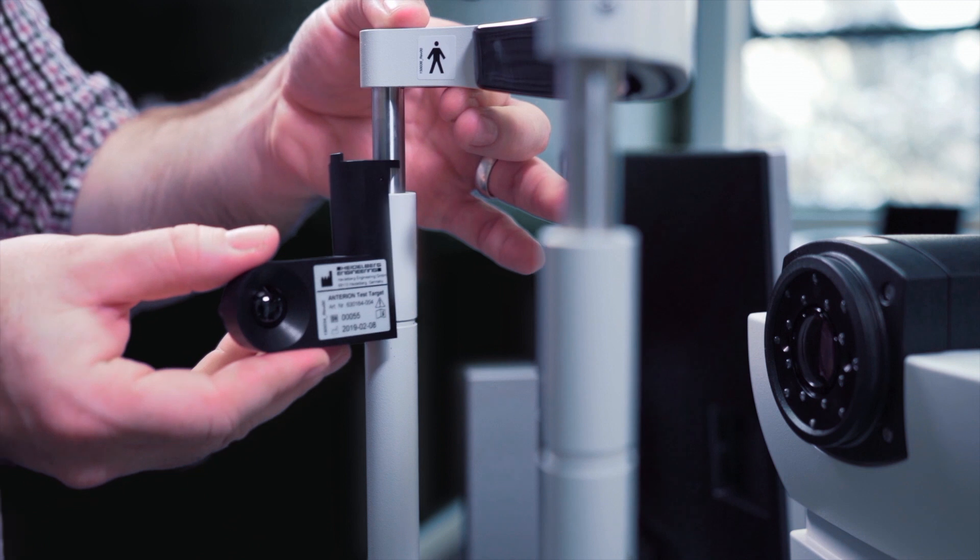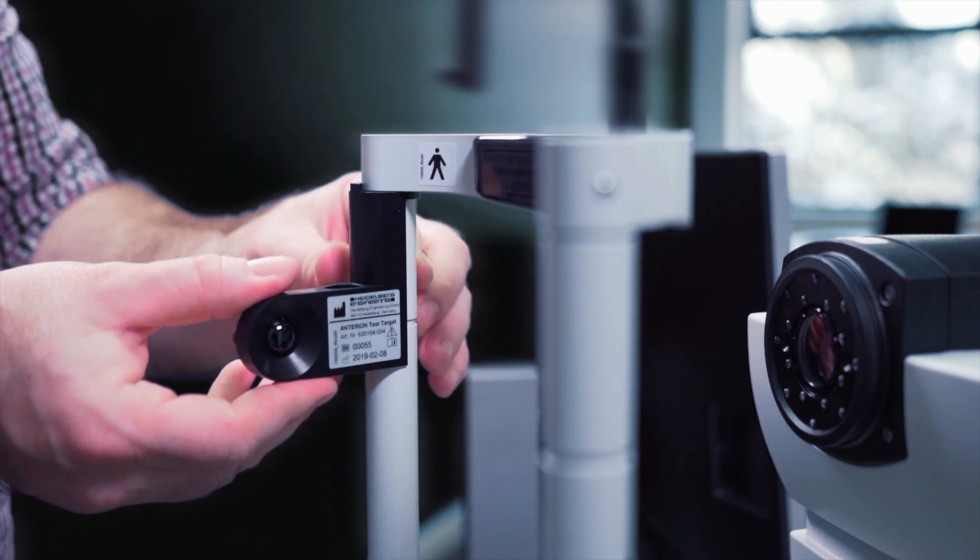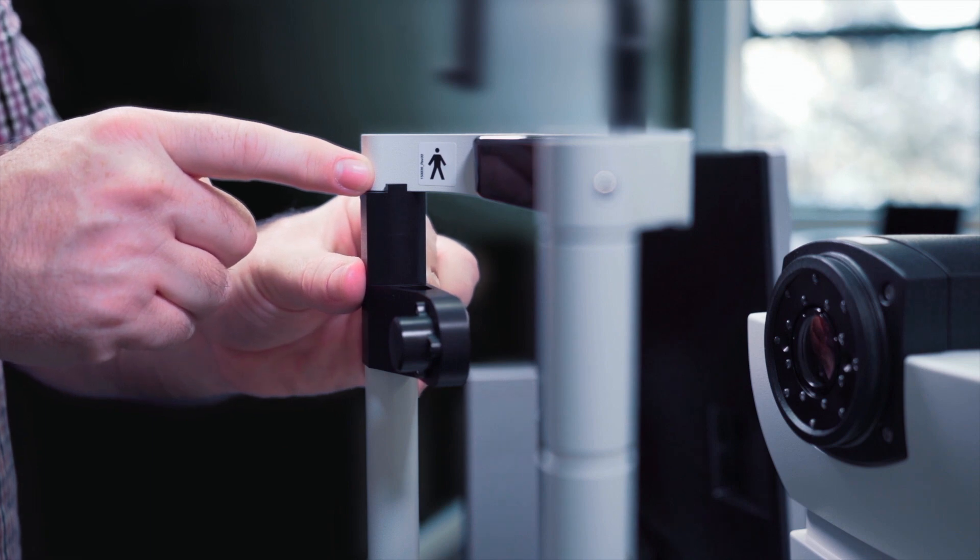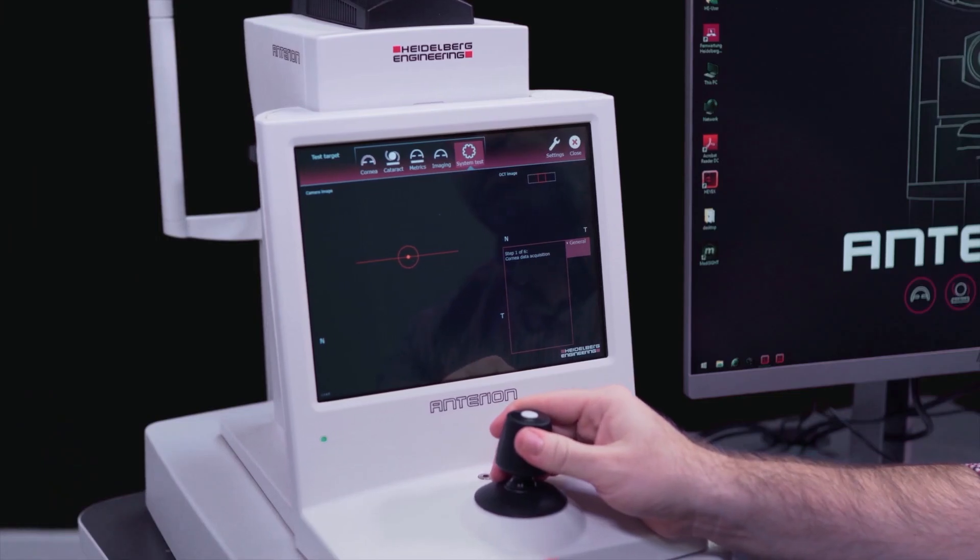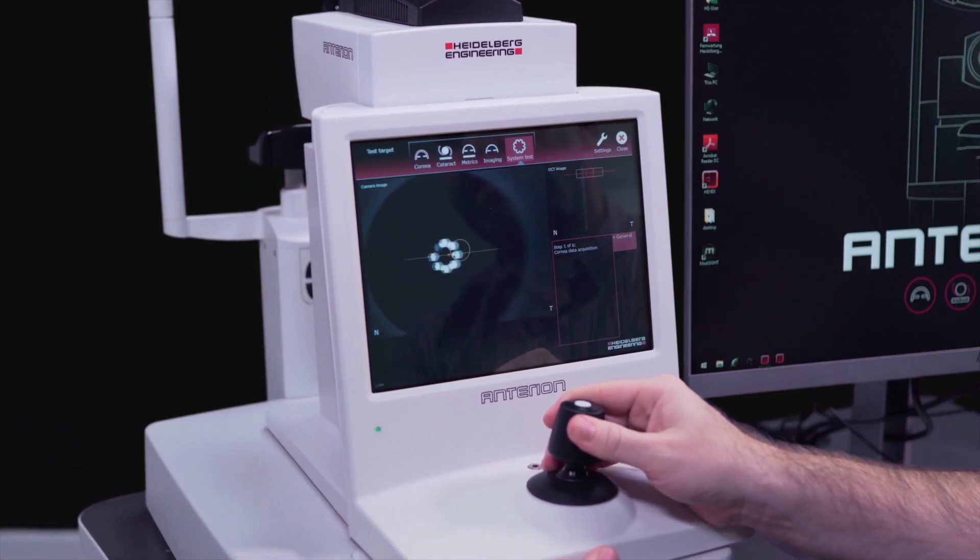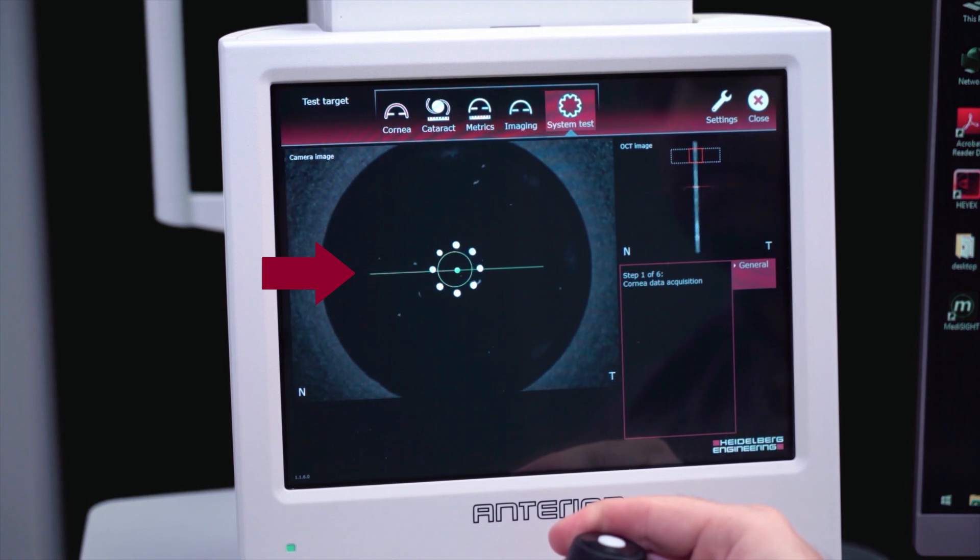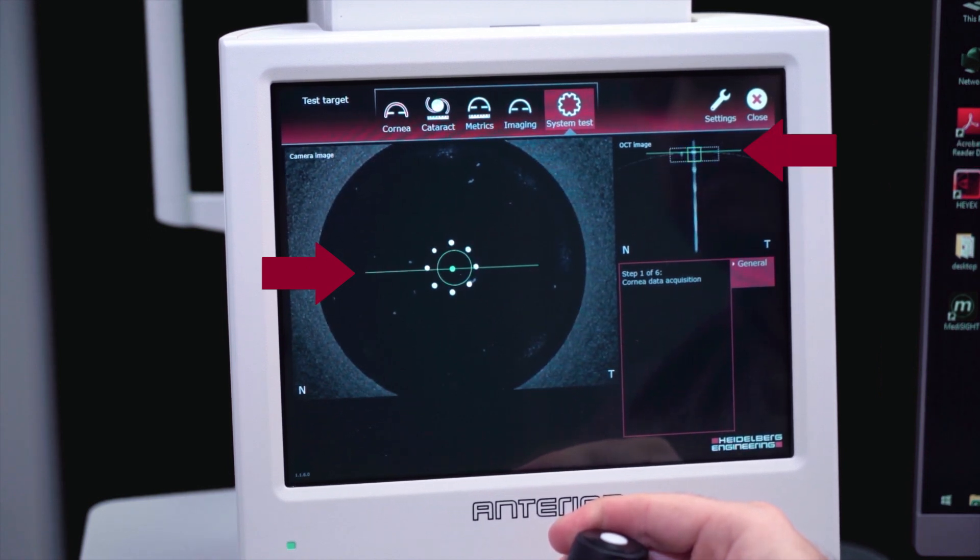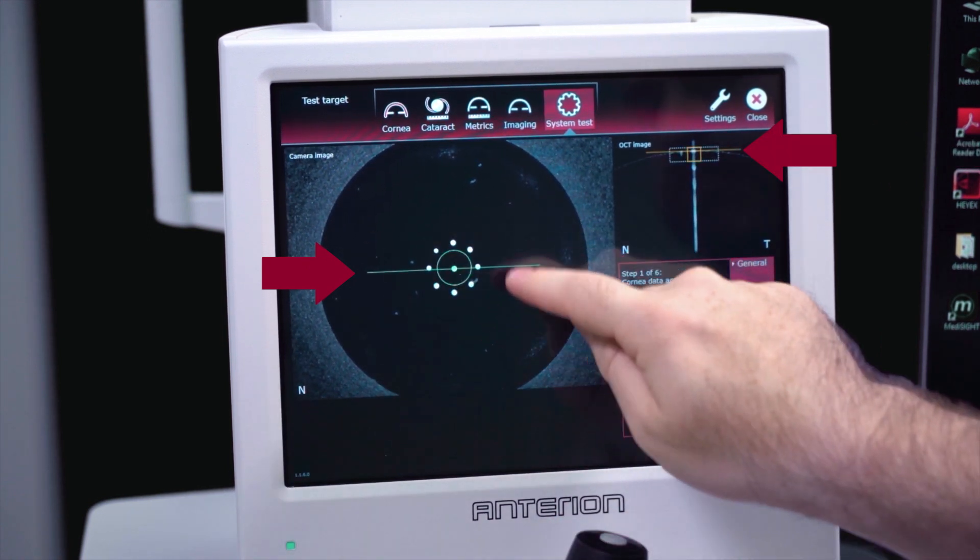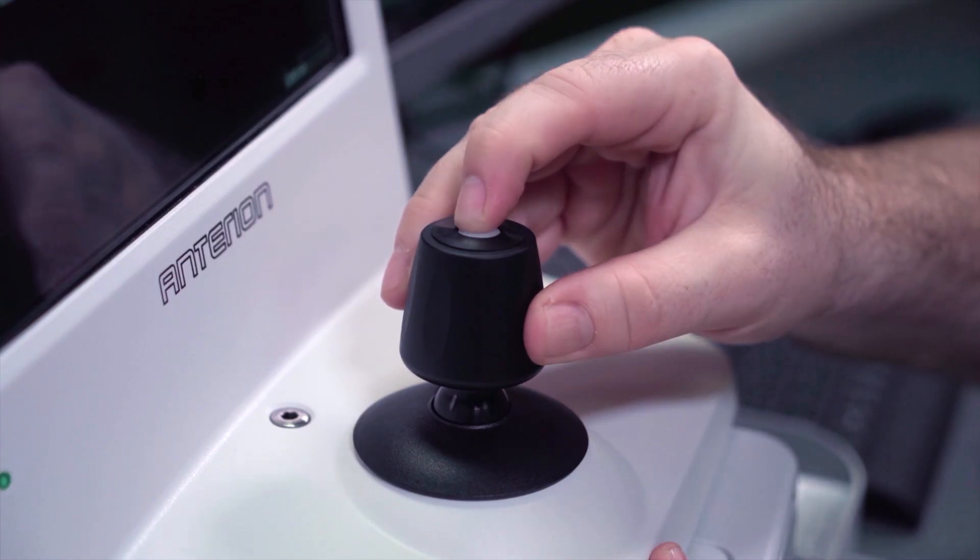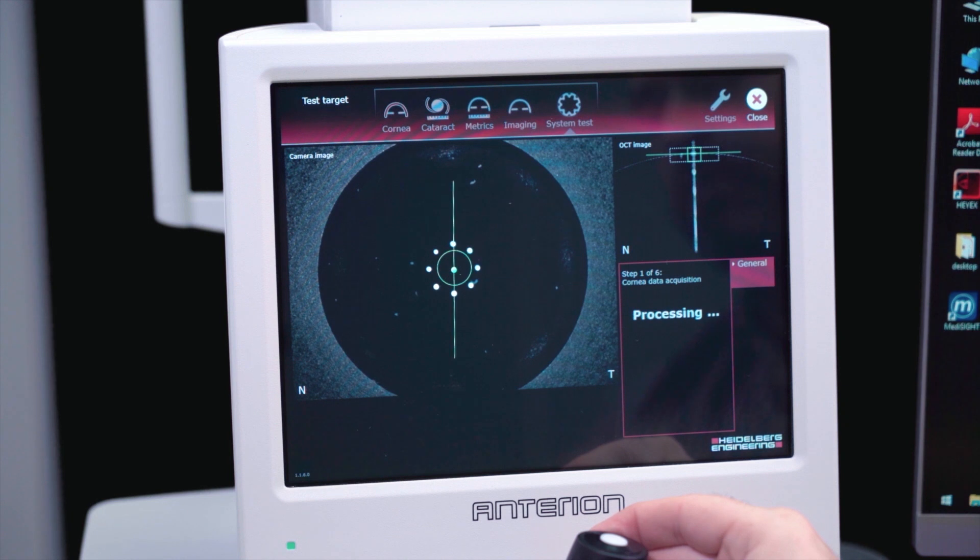Ensuring the test target is clean, we attach it to the headrest as demonstrated. To perform the system test, align the circle and horizontal line on the camera image until it goes green, and also the square and horizontal line on the OCT image. Press the joystick button to acquire the image.